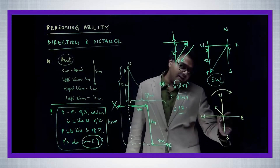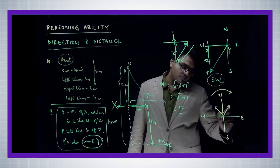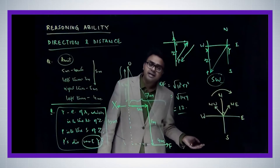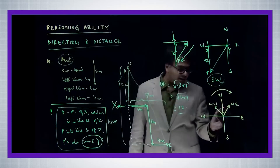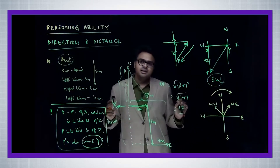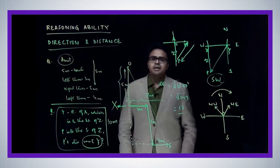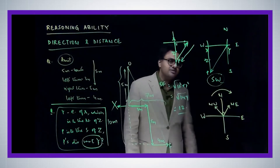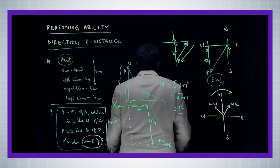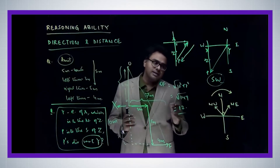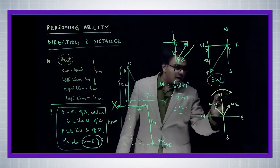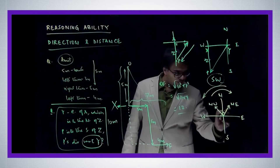Clockwise is like this, so turning 90 degrees clockwise from northwest brings the man to face northeast. After that, the man turns 180 degrees anti-clockwise. Note that 180 degrees is special — whether you turn clockwise or anti-clockwise 180 degrees, you end up in the same place, the exact opposite direction. So a 180-degree anti-clockwise turn from northeast brings the man to face southwest.